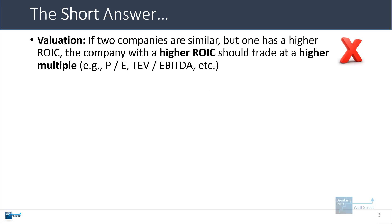If two companies are similar but one has a higher return on invested capital, the company with the higher ROIC should, in theory, trade at higher valuation multiples in general.